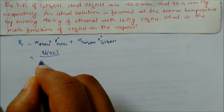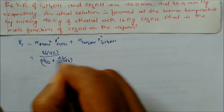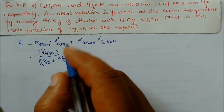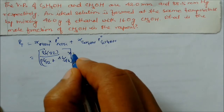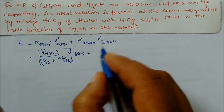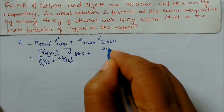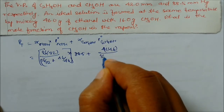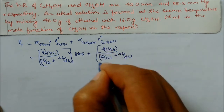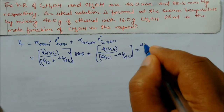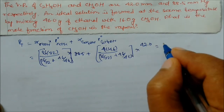The mole fraction is calculated as moles divided by total moles. For methanol: 16/32, and for ethanol: 46/46. Substituting these into Raoult's Law with the vapor pressure of methanol 88.5 mmHg and ethanol 42 mmHg, we get the total pressure.